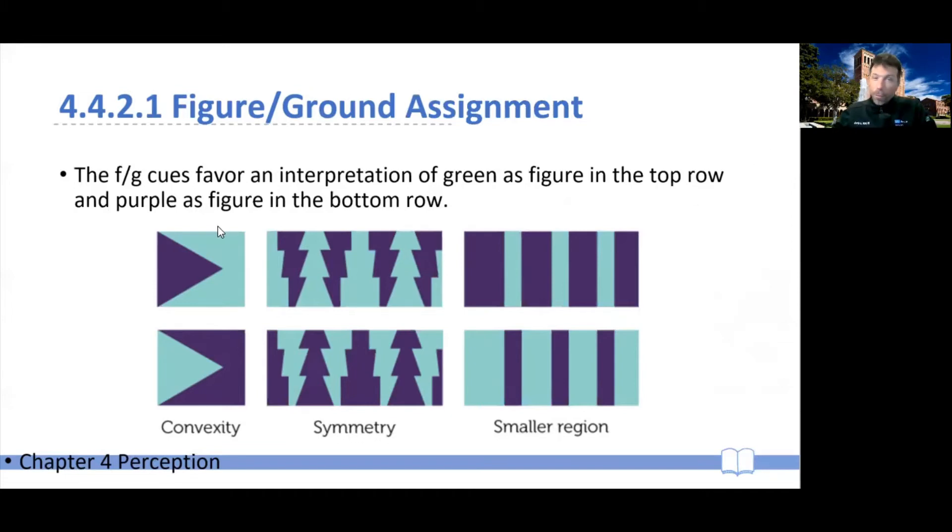Well, the Gestalt school thought there were a number of different principles that seem to be particularly important in order to segment images into figure and ground. For example, on the left, convexity seems to be a principle. So when there's a shape that is convex, that our minds just tend to perceive convex figures, convex patterns, as making figures, as making foreground objects, as opposed to background objects. So the contention is that in these two squares on the left, you tend, not necessarily always, but you tend to spontaneously see the triangle as the object and the rest as the background.